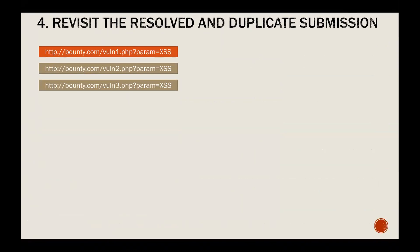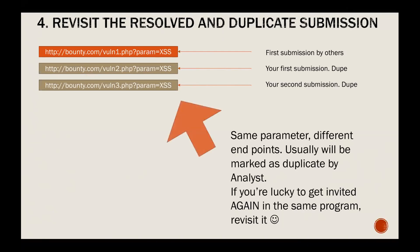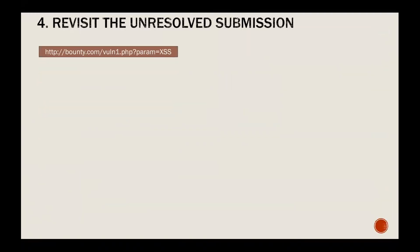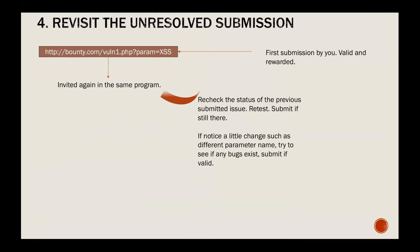The fourth tip: revisit your old or duplicate submissions. Usually you submit cross-site scripting from the same parameter but a different endpoint, and your submission is marked duplicate. But if you're lucky and get invited again to the same program, just submit it again. For example, in 2016 I submitted on a rejected path marked as duplicate, but then I was invited again to the same program as an ongoing private, submitted it again, and it was still being accepted and not yet resolved — so I got more rewards from there.